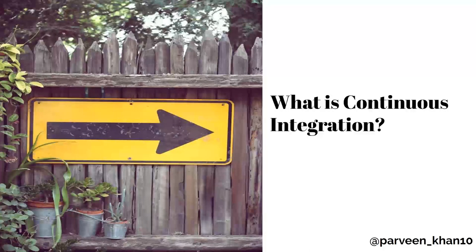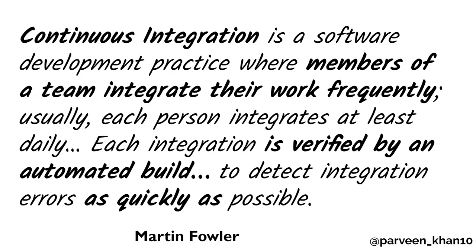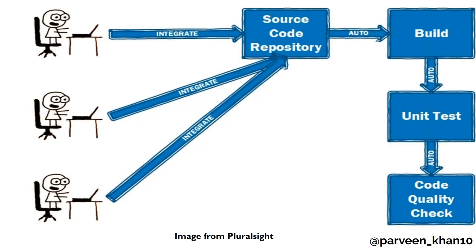The next thing I wanted to understand was continuous integration, since that was what we were starting with. Martin Fowler's definition: 'Continuous integration is a software development practice where members of a team integrate their work frequently — usually each person integrates at least daily — and each integration is verified by an automated build to detect integration errors as quickly as possible.' I also found an image that gave me a bit more clarity, though it was still theoretical.